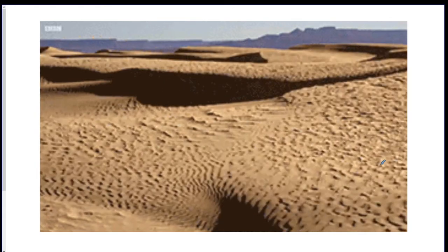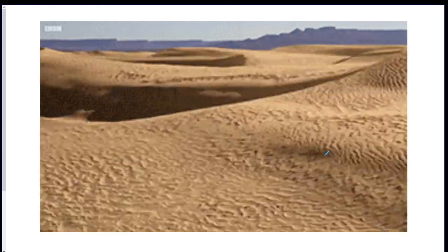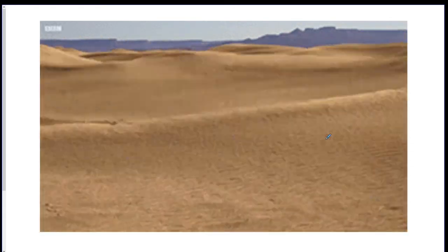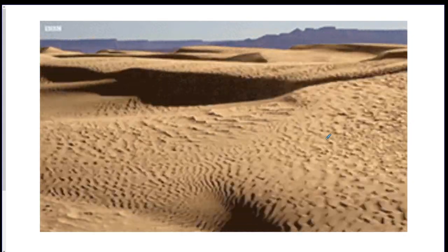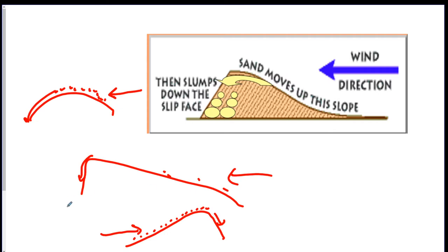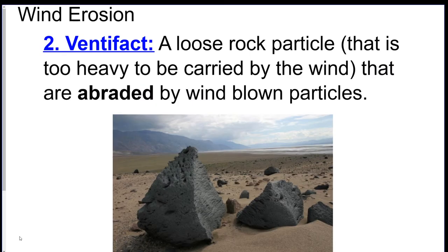In a real desert, the wind shifts directions all the time, so dunes are dynamic things — they change shape based on which side the wind is coming from. Sometimes, if you have a big boulder and it's windy, you can see tiny holes in the boulder. Those are from abrasion — the sand is blown by wind into the rocks and creates these little holes.